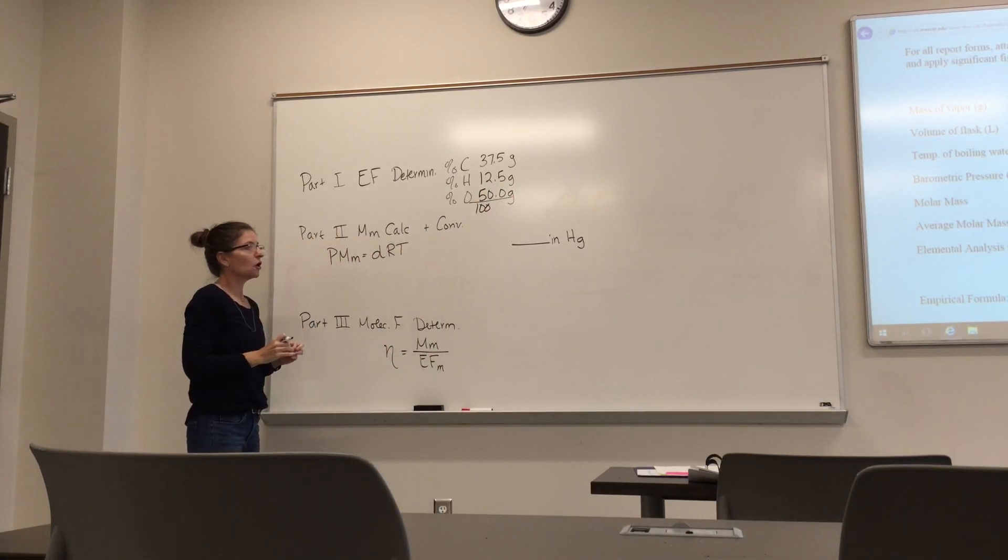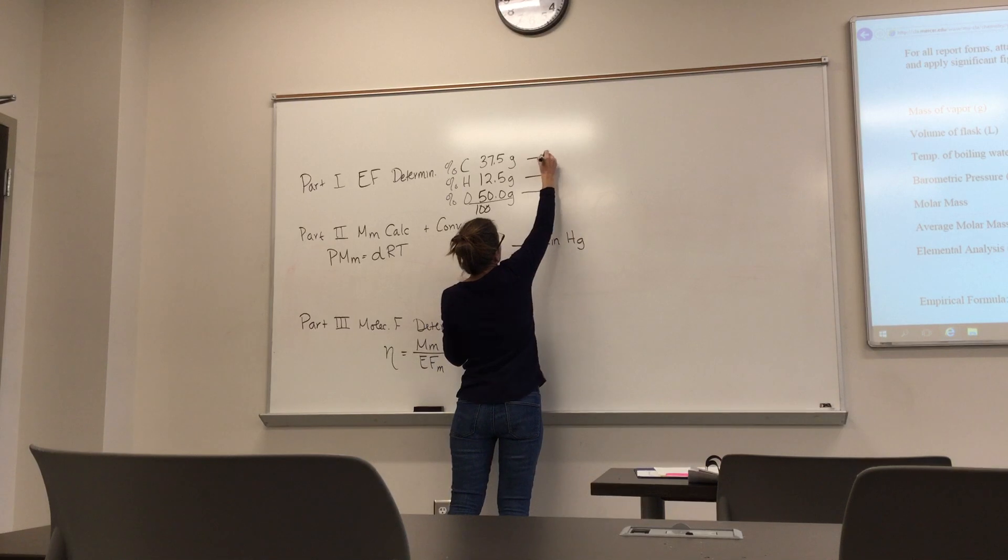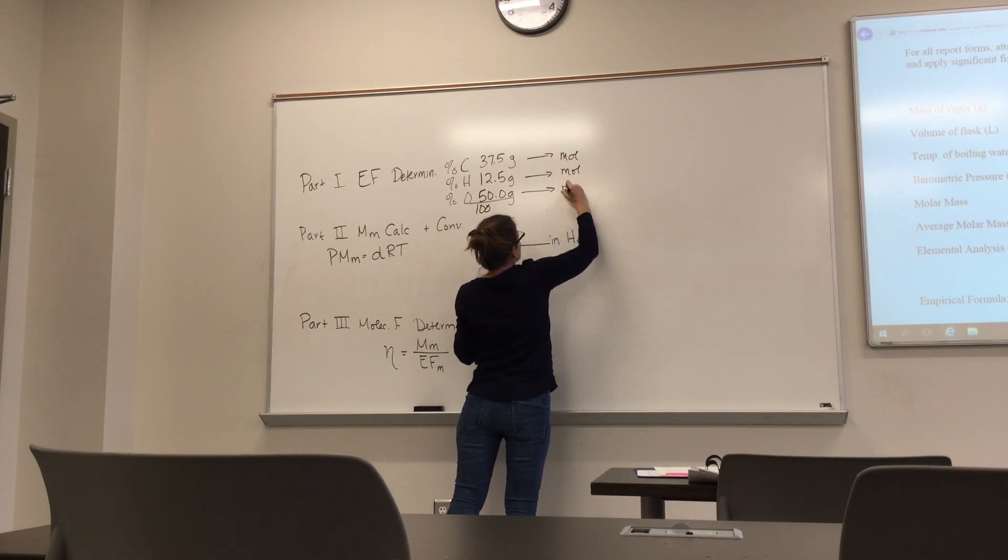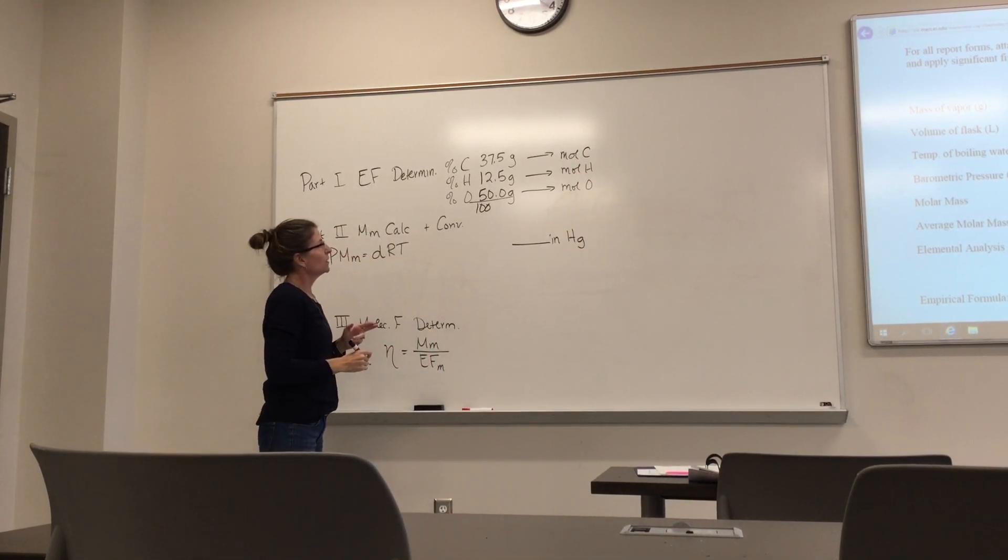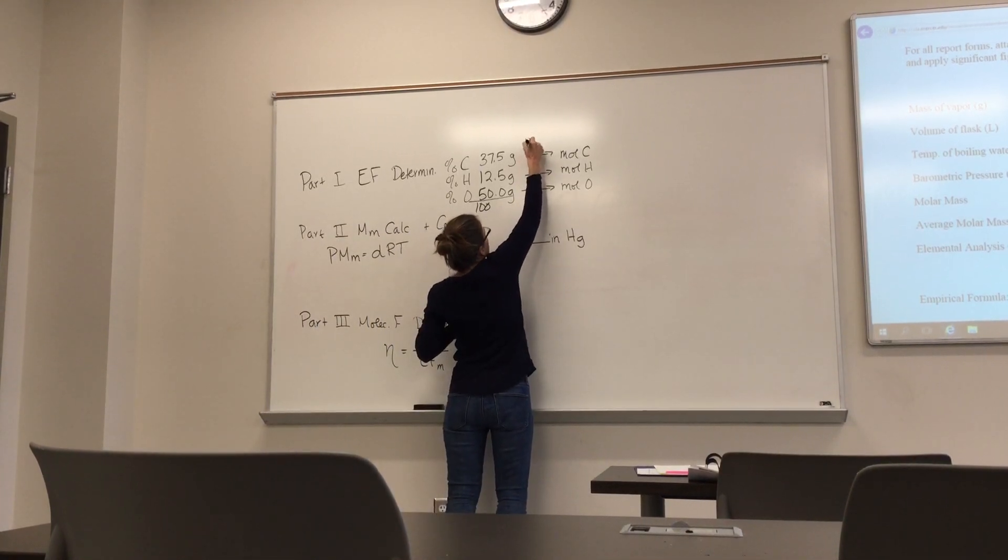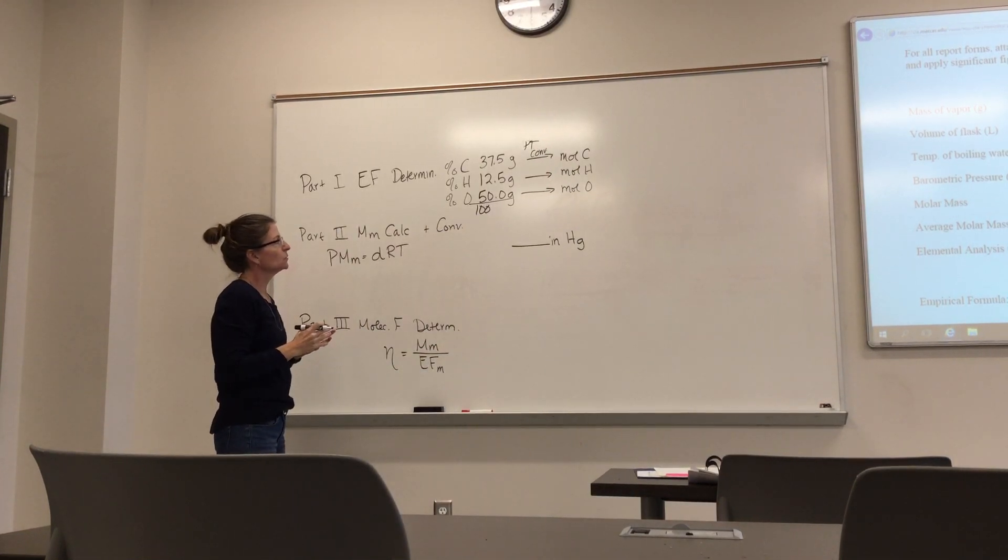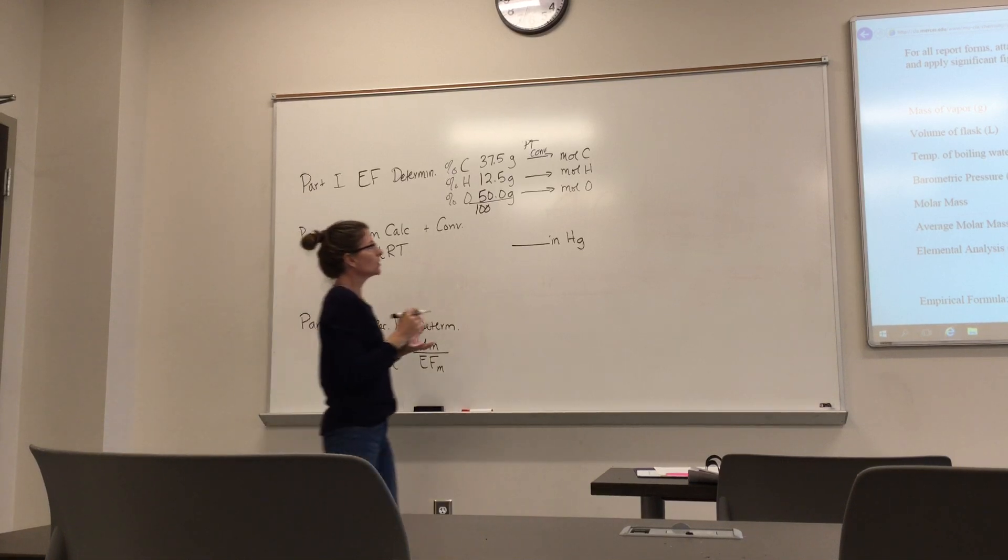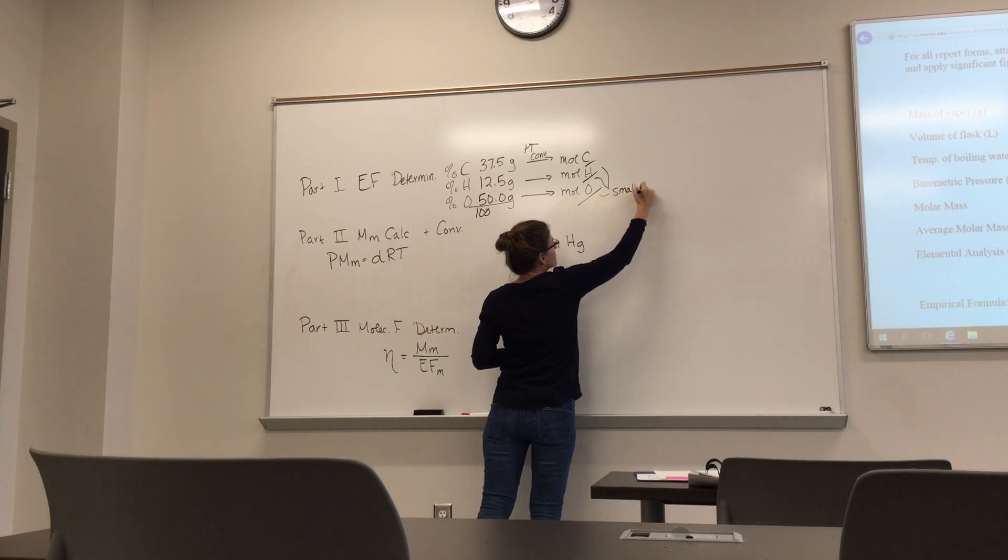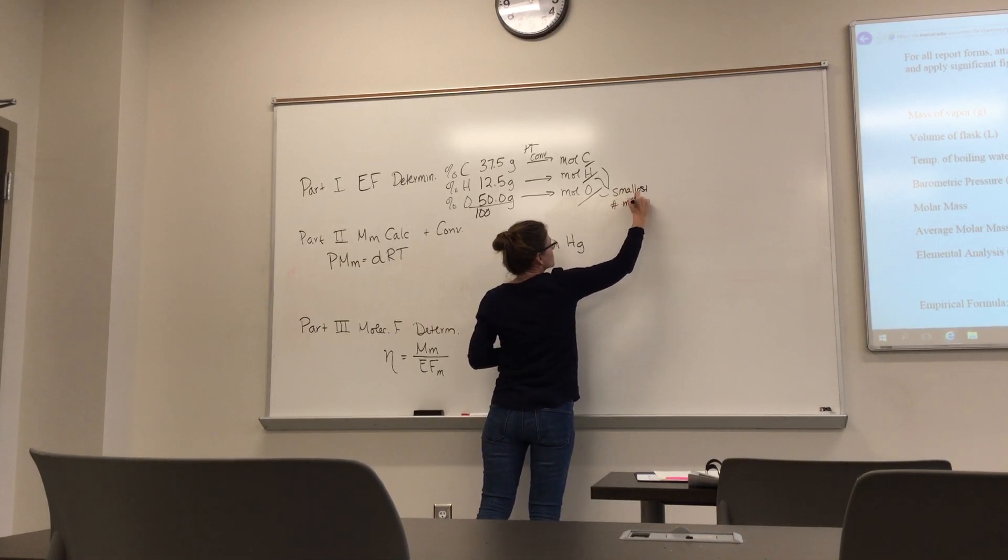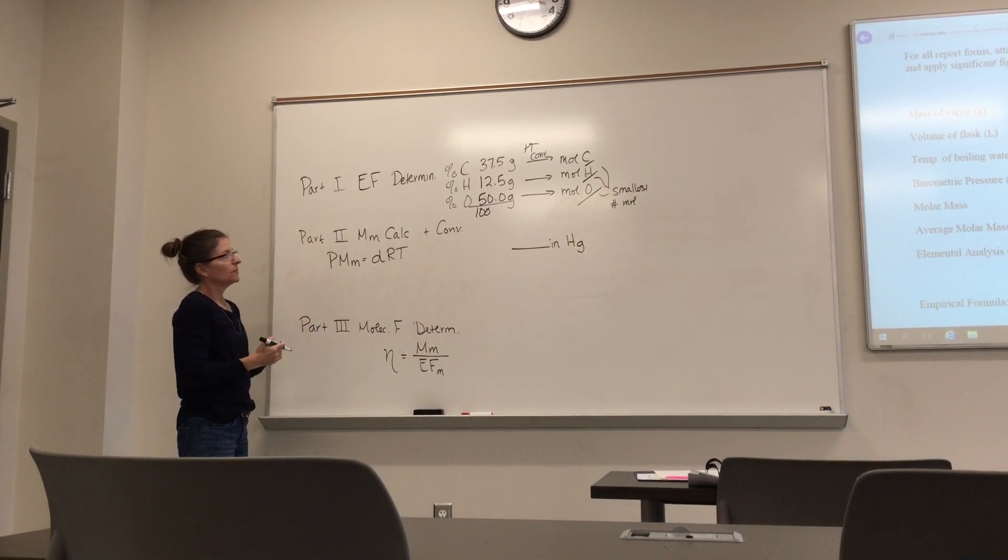Now I said it's the smallest whole mole ratio. So that means I've got to convert all of these to moles. Now how do I convert those to moles? Where do I go for that information? That's right, we go to the periodic table. So all of these conversions are from the periodic table. Now that I have them in moles, we've then got to do the smallest whole mole ratio. So we're going to divide each of those by the smallest number of moles.